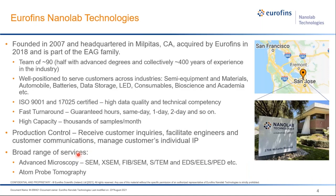About Nanolab: we were founded in 2007 and are headquartered in Milpitas, California, about 50 miles south of San Francisco. We were acquired by Eurofins in 2018 and are now part of the EAG family. We have about 90 employees, half of whom have advanced degrees, and collectively we have more than 400 years of experience in the industry. We provide services to a large range of customers across industries including semiconductor equipment, semiconductor materials, automotive, battery, data storage, LED, consumer electronics, bioscience, and academia. We are ISO 9001 and ISO 17025 certified and guarantee high-quality data.